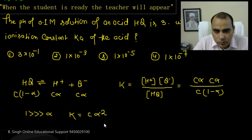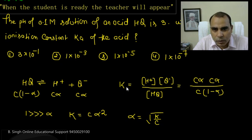Now we have to find the value of alpha. So alpha is equal to the square root of Ka upon c, the dissociation constant of the acid.